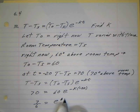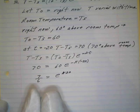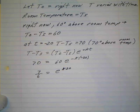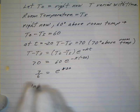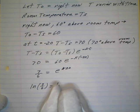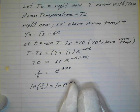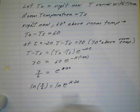Or k times 20. And then if we want to solve for k, we have to take the natural log of both sides. Put this up a little bit here. So the natural log of 7/6 equals the natural log of e.